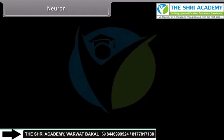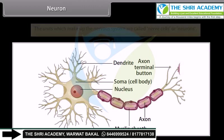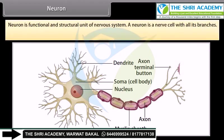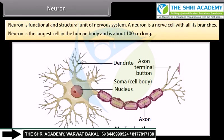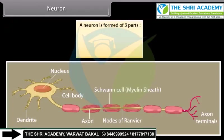The units which make up the nervous system are called nerve cells or neurons. A neuron is a functional and structural unit of the nervous system — a nerve cell with all its branches. The neuron is the longest cell in the human body and is about 100 cm long.